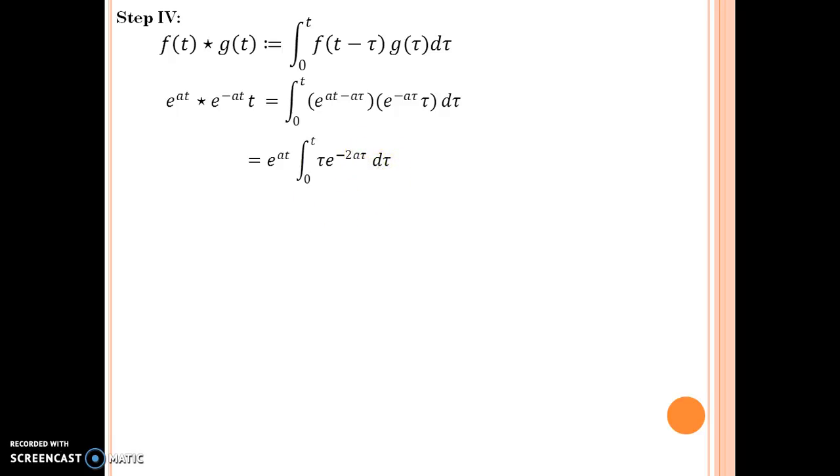Why have we got this e to the power a t outside? It is because our variable under which we are going to perform integration is tau. So anything other than tau, like if this is a function of variable t, it would be treated as constant. So e to the power a t has been treated as constant and it has been pulled outside. So let us now go ahead.